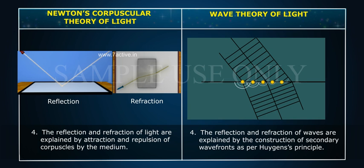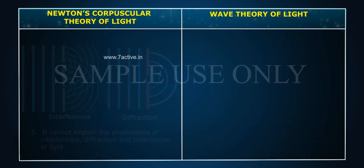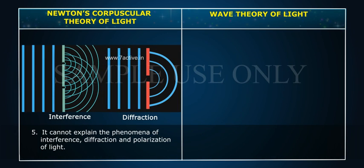The reflection and refraction of waves are explained by the construction of secondary wave fronts as per Huygens' Principle. Point 5: It cannot explain the phenomena of interference, diffraction, and polarization of light.